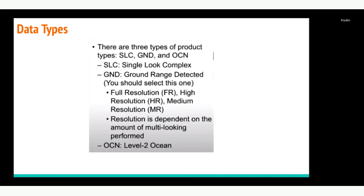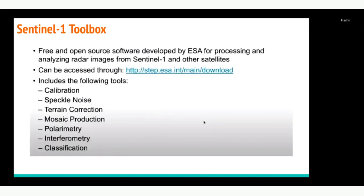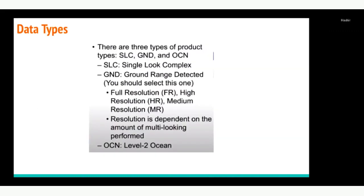There are different types of products in Sentinel-1: SLC (Single Look Complex), GRD (Ground Range Detected), and OCN. In this tutorial we will use the Ground Range Detected product, and I will show you very soon how to download it. One important note: in SLC you will have phase information, which you won't have in Ground Range Detected.